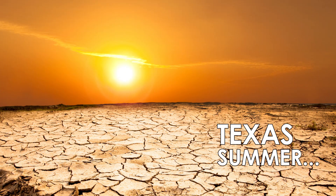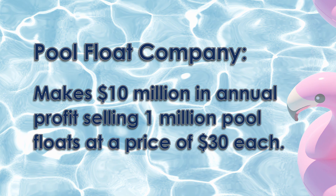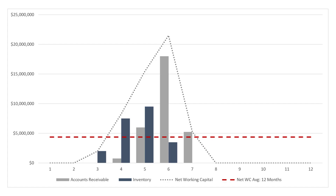Texas is notoriously hot during the summer months, so it would be practical to assume that the company's sales ramp in anticipation of the heat and that they peak sometime in summer. This company makes $10 million of profit selling 1 million pool floats at an average price of $30 each. The management team, being fully aware of the company's revenue cycle, significantly increases inventory purchases early in the year. By June of each year, this company has all of the inventory it will require for the summer season. During these summer months, sales increase, inventories are sold off, and the company generates cash.